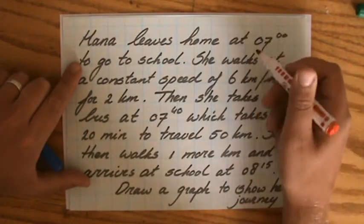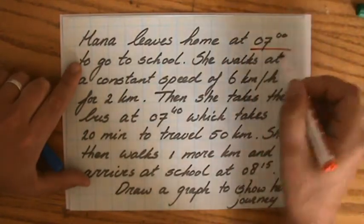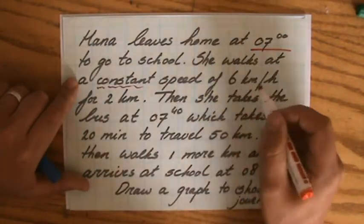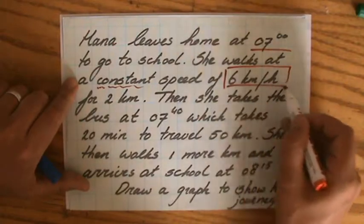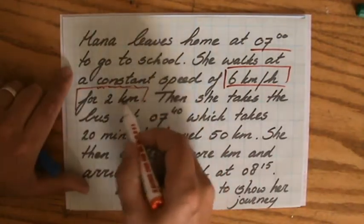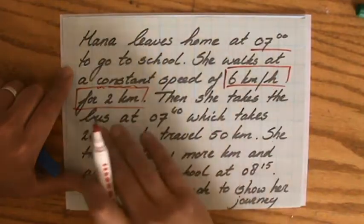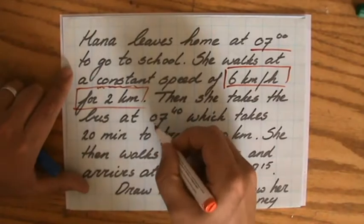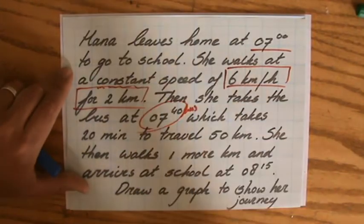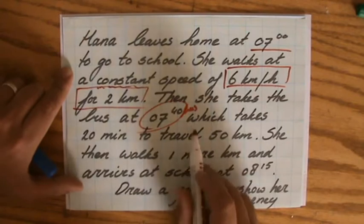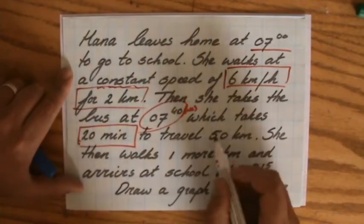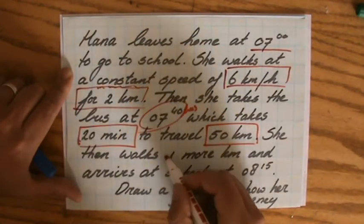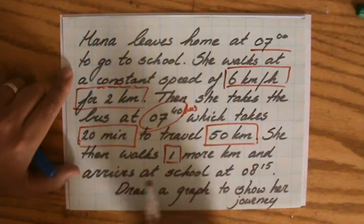Hannah leaves home at seven o'clock to go to school. She walks at a constant speed of six kilometers per hour for two kilometers. Then at 7:40 she takes the bus, which takes her 20 minutes to travel 50 kilometers.